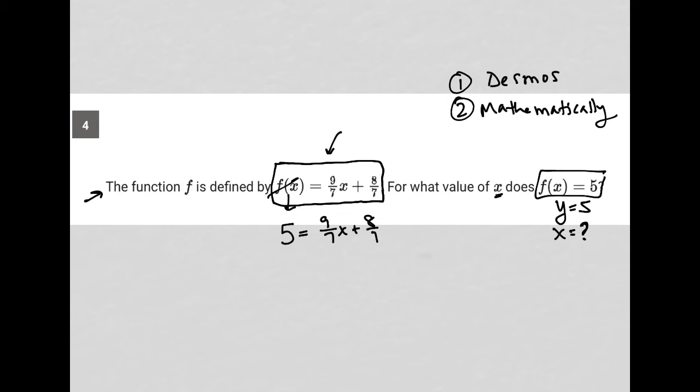I would want to combine like terms. So I'm going to subtract 8/7 from both sides. So now 8/7 crosses out on the right-hand side. I now have like 5/1 - 8/7 = 9/7.